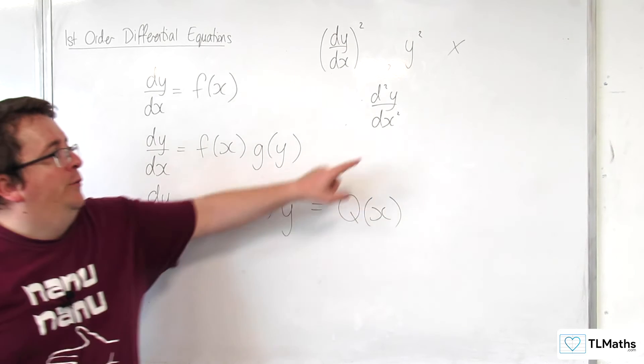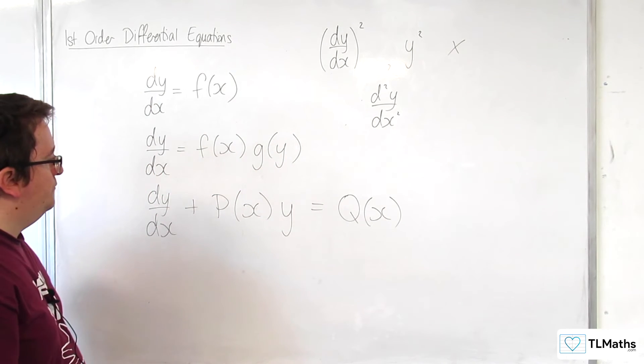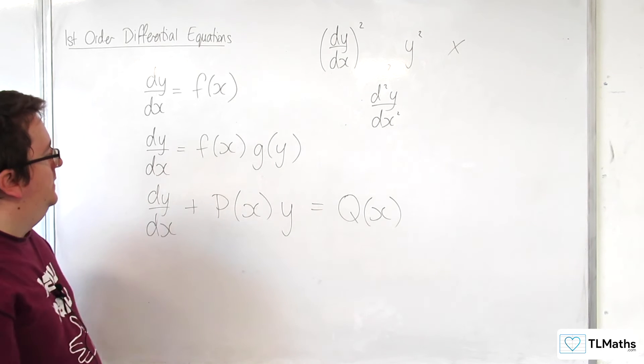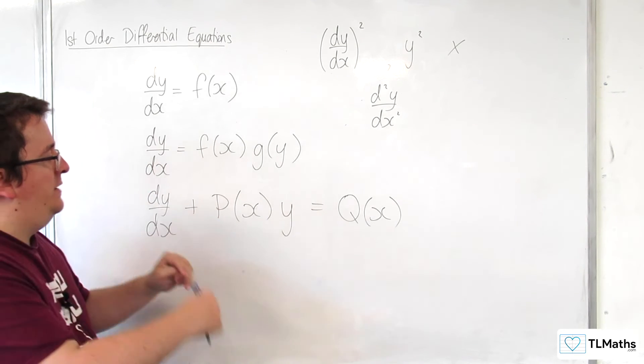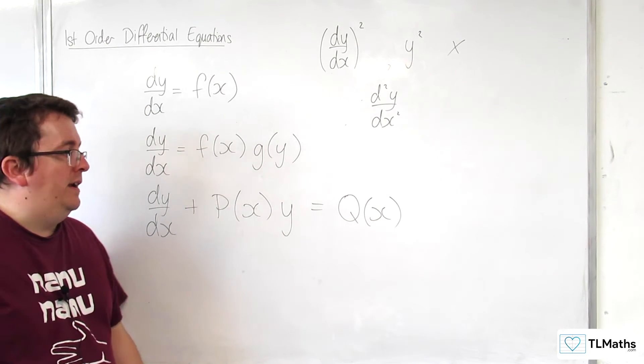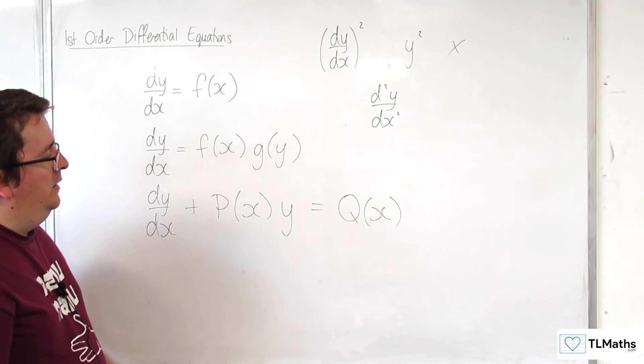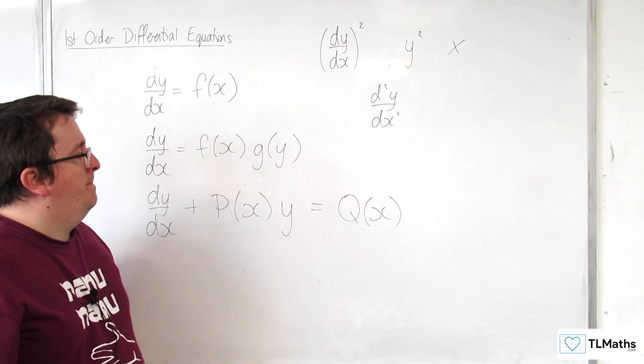If that was the highest one that we had, then that would be a second-order differential equation. It's linear because you don't have dy by dx all squared, you just have dy by dx, and you also just have y here rather than a y squared or anything else. And so that's the form that we will be considering in this first section.